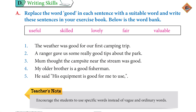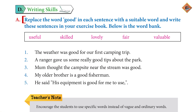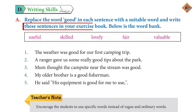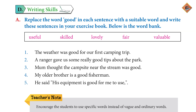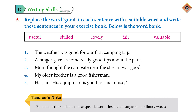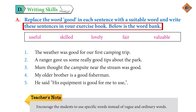Page 112, Section: Writing Skills. Question A — replace the word 'good' in each sentence with a suitable word and write these sentences in your exercise book. Below is the word bank. Near the words that are given, wherever the word 'good' is used, you have to write another word which has been given to you in the word bank. This is why you have synonyms — words which have the same meaning to use.